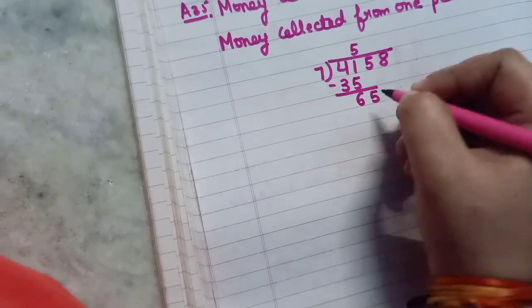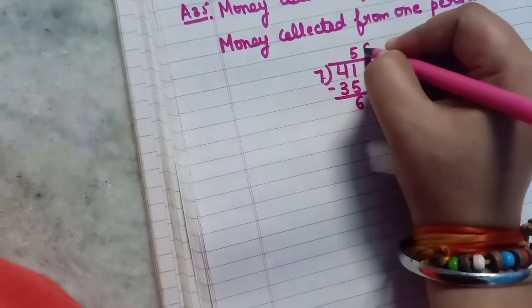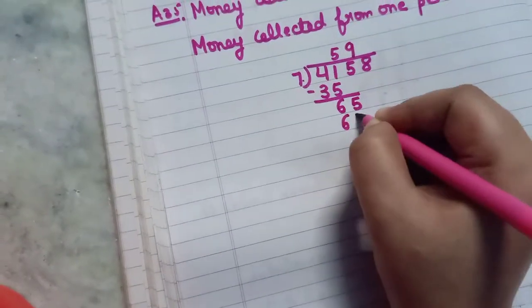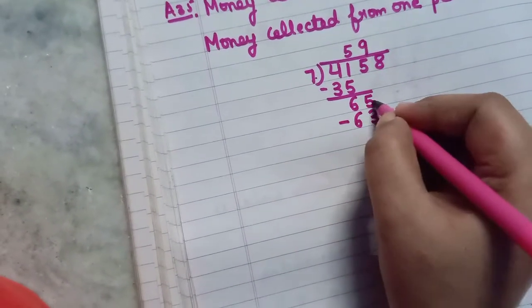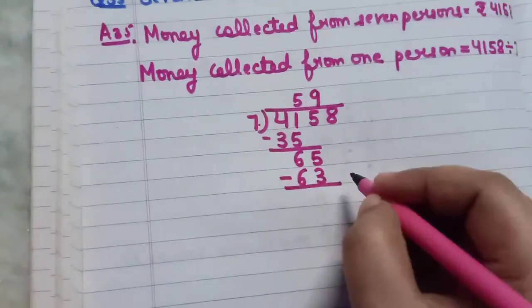Now copy down 5. Again check. 7 nines are 63. Again you can subtract 5 minus 3 will be equal to 2.